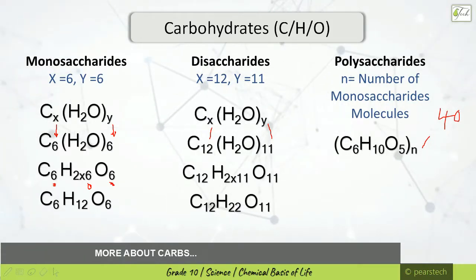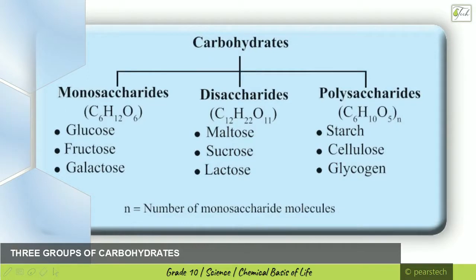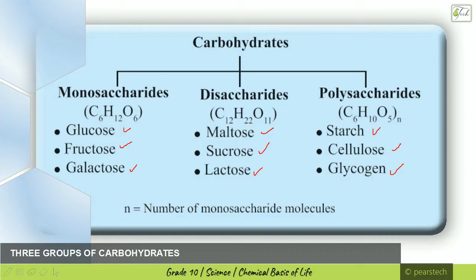So the three groups of carbohydrates are monosaccharides, disaccharides, and polysaccharides. The monosaccharides include glucose, fructose, and galactose. Disaccharides include maltose, sucrose, and lactose. Polysaccharides include starch, cellulose, and glycogen. We will learn everything in detail in our coming session. Take care of your education and yourself — bye bye.